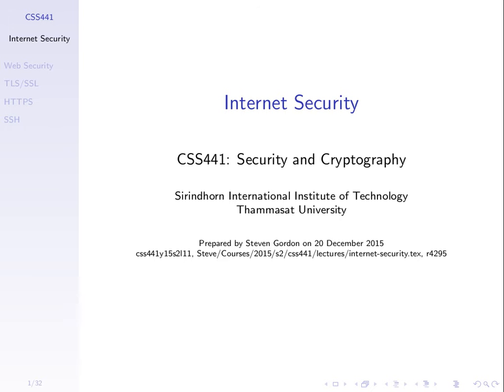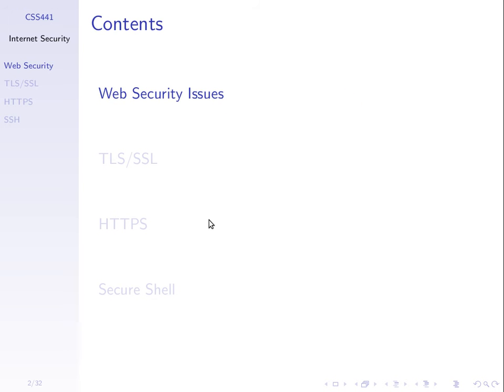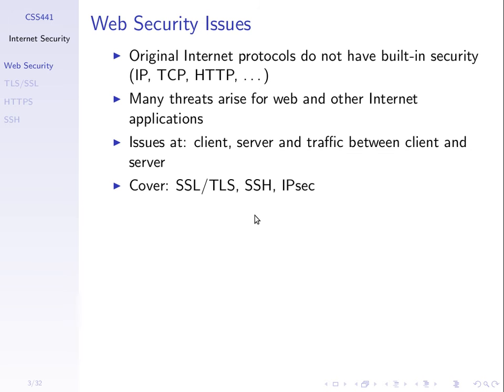We'll use HTTPS as an example, which we all use, and look at how it works. When we go through the protocols, we'll see the algorithms come into play: public key algorithms like RSA and Diffie-Hellman, symmetric key algorithms, MACs, and others. We'll finish with these examples and focus on web security.